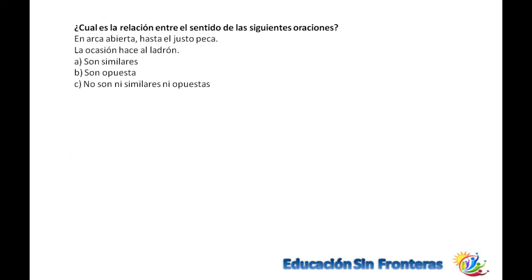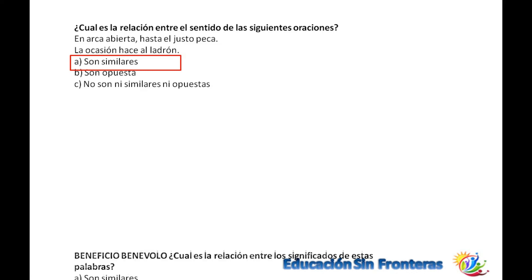¿Cuál es la relación entre el sentido de las siguientes oraciones? El que en arca abierta hasta el justo peca. La ocasión hace al ladrón. Son similares, porque ambas indican que a la persona que está robando se la pusieron fácil para robar.